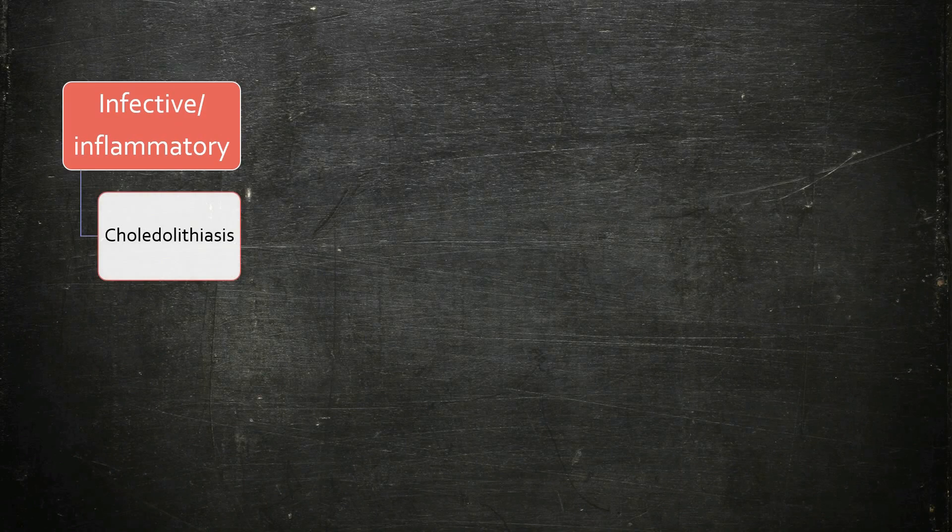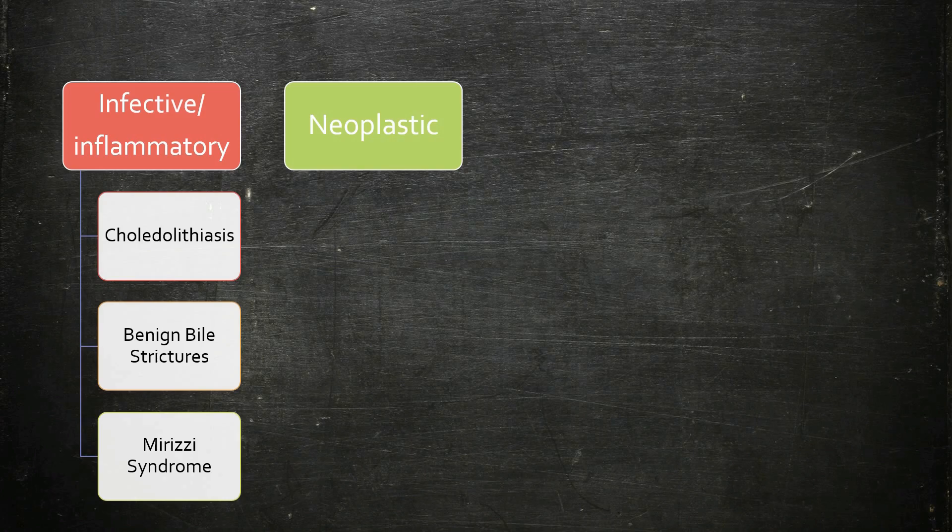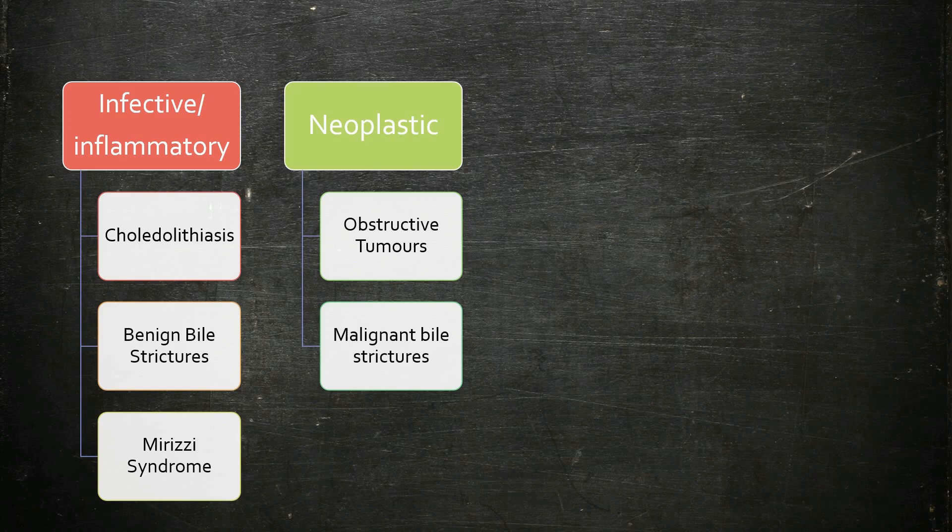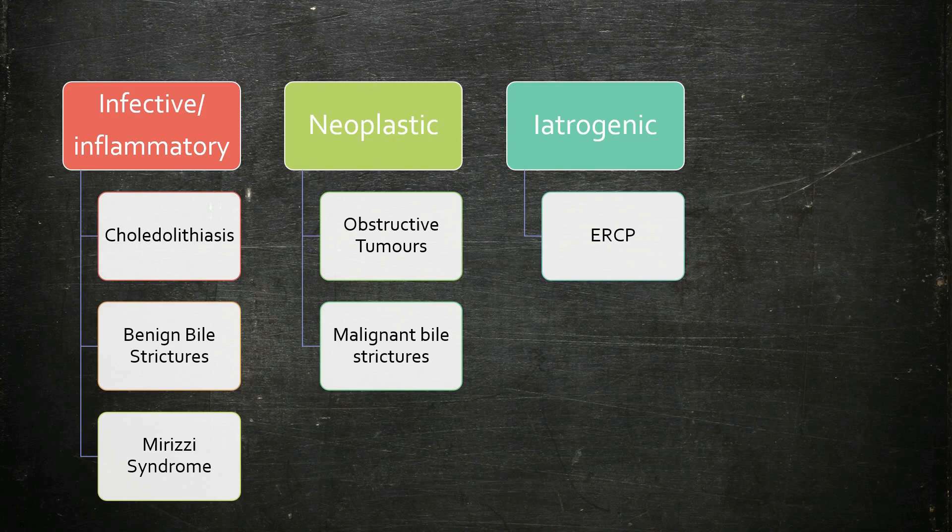Causes of acute cholangitis can be split into infective and inflammatory — including gallstones, benign bile strictures, and Mirizzi syndrome. Neoplastic causes include obstructive tumours and malignant bile strictures. ERCP is also a well-known cause, as are the autoimmune conditions primary sclerosing cholangitis and primary biliary cholangitis.